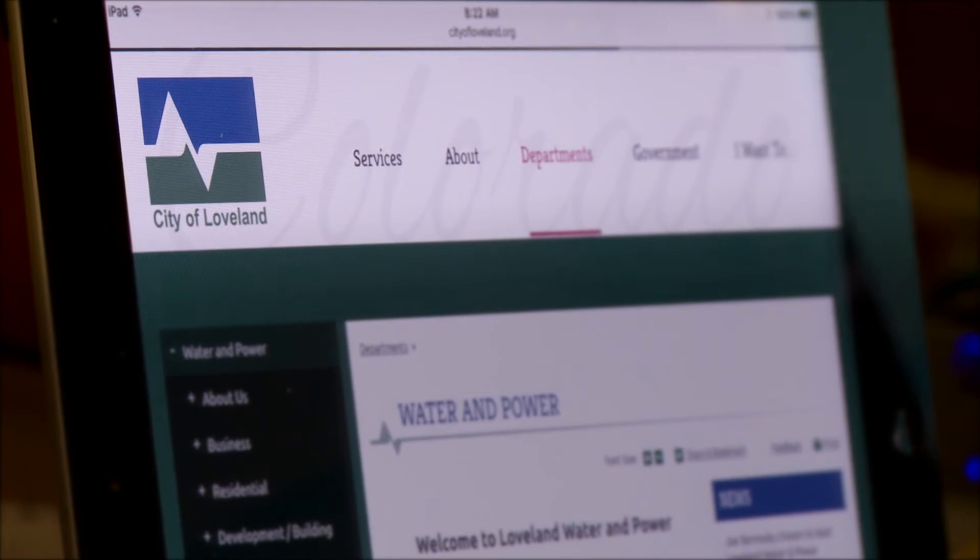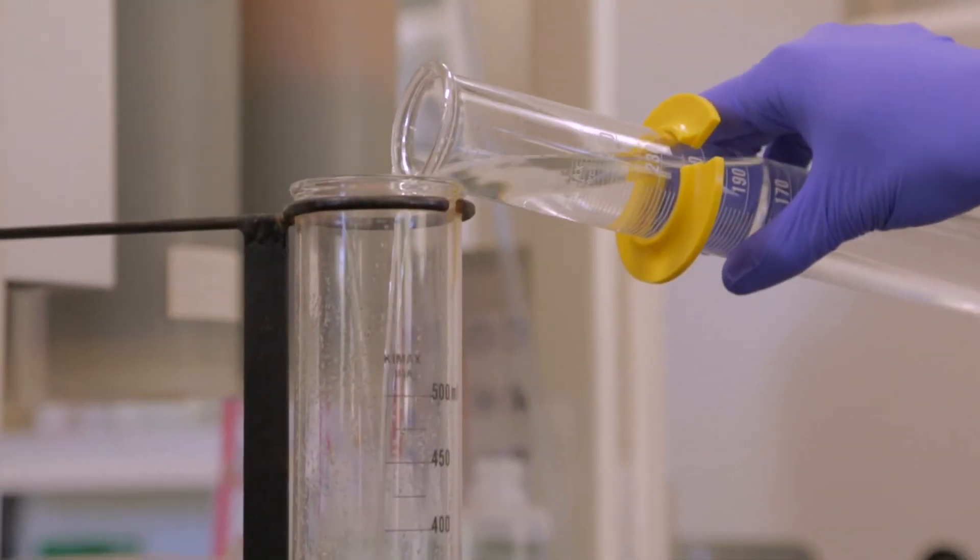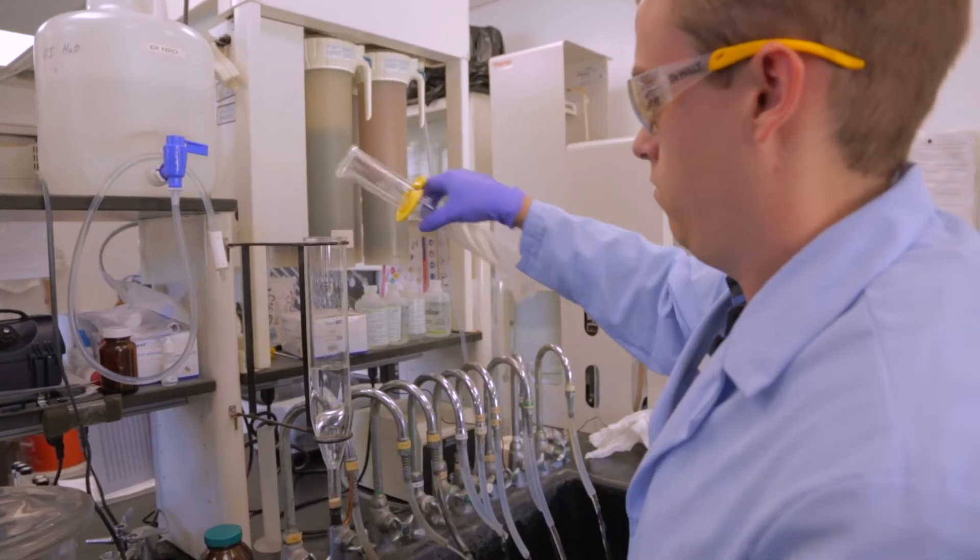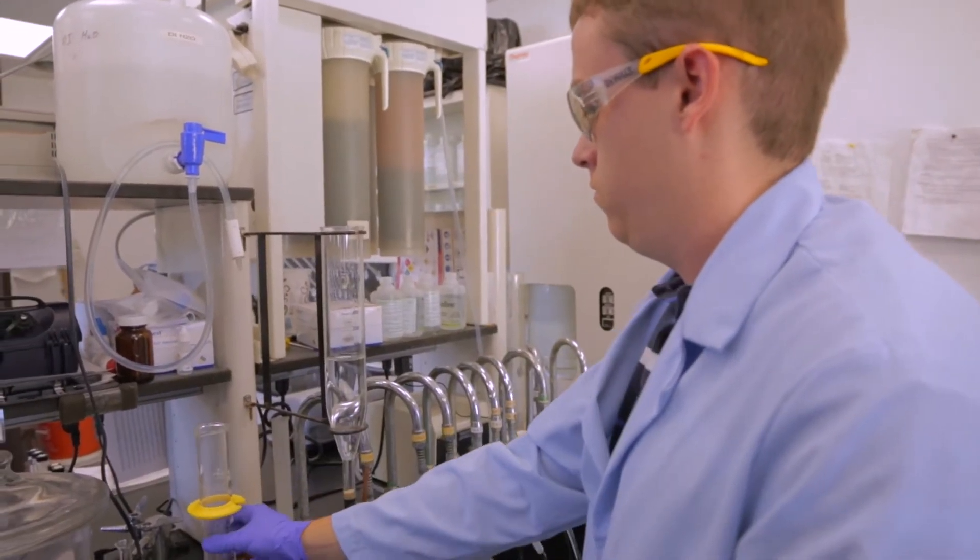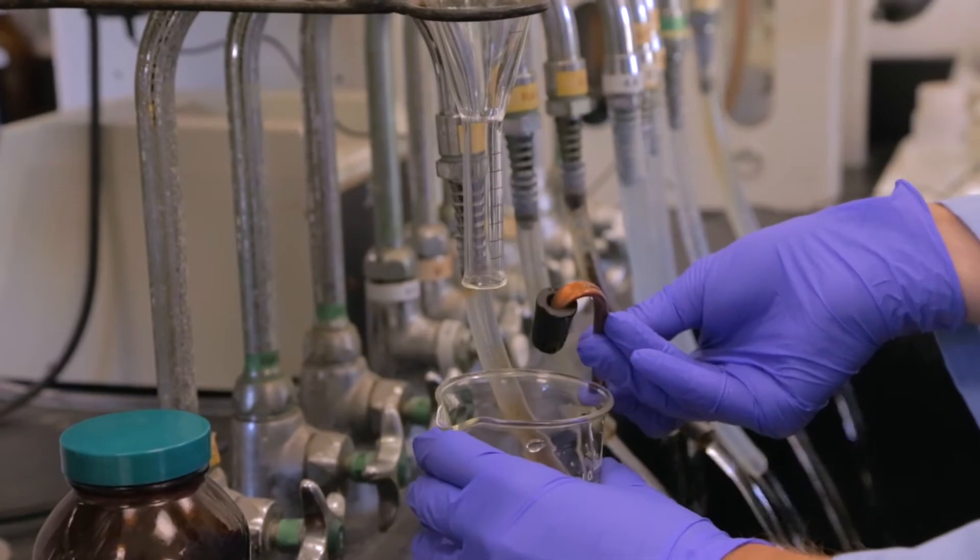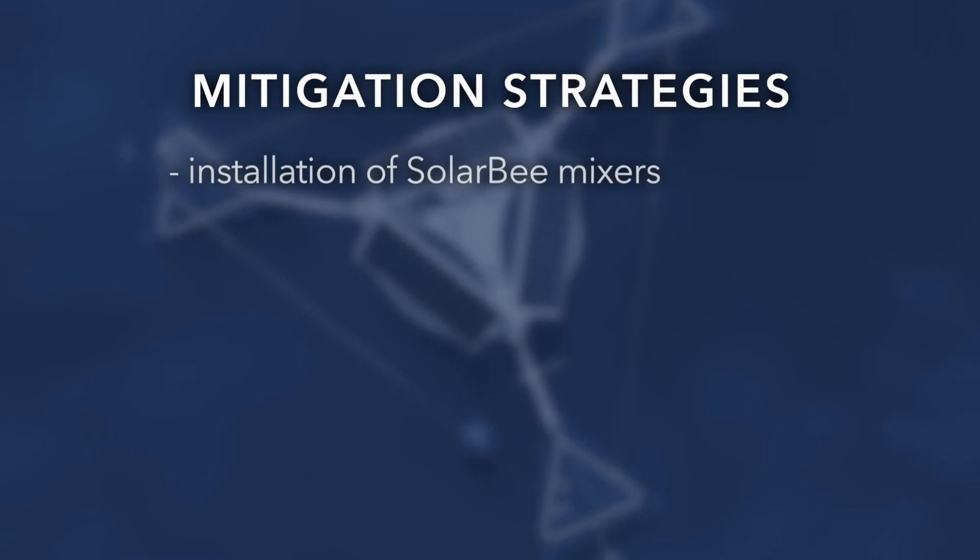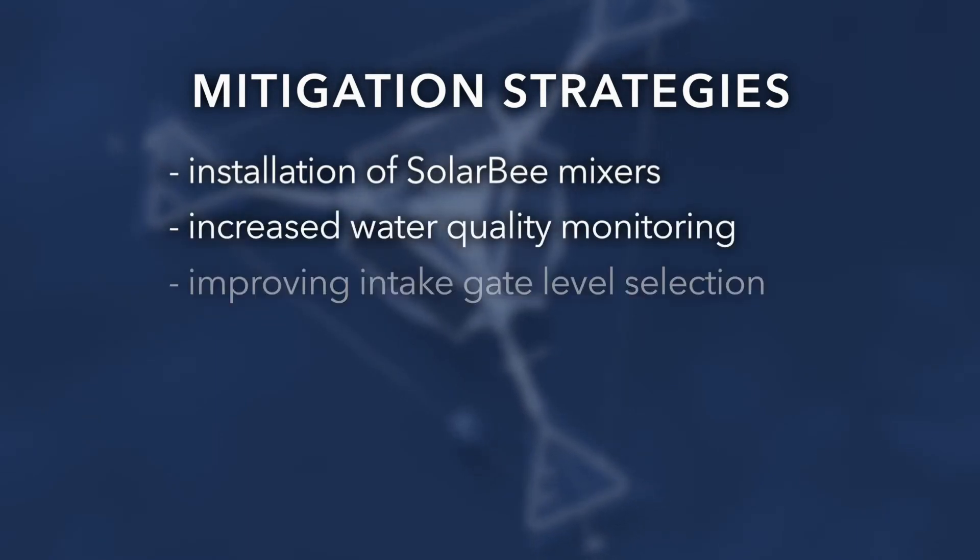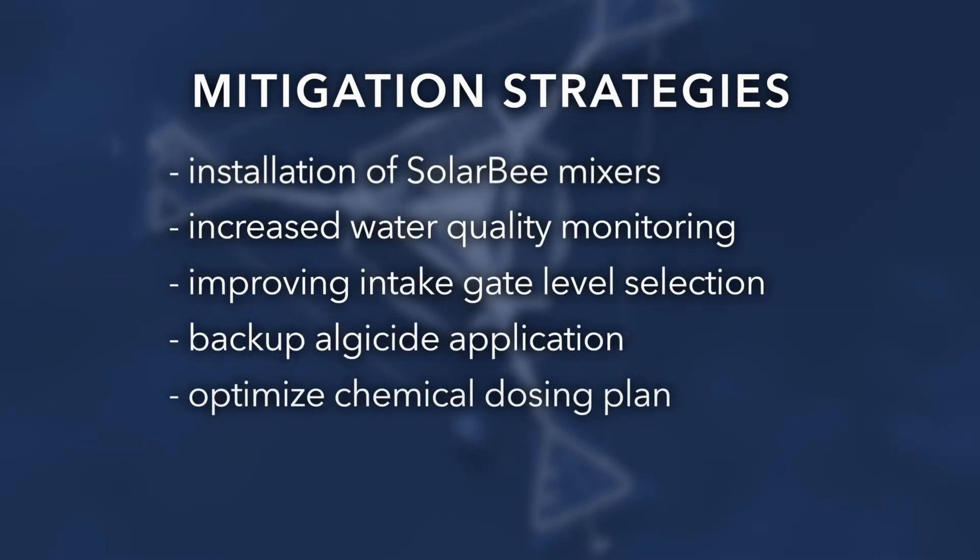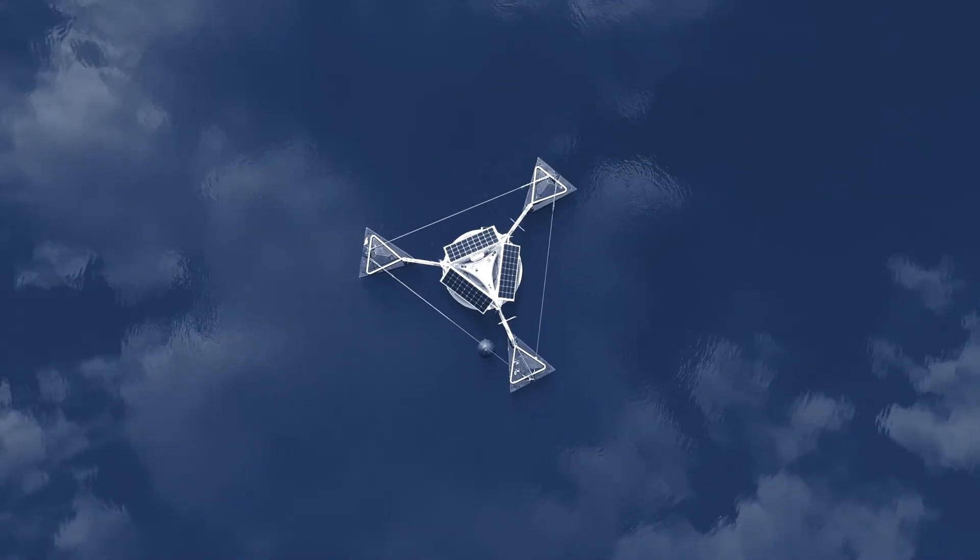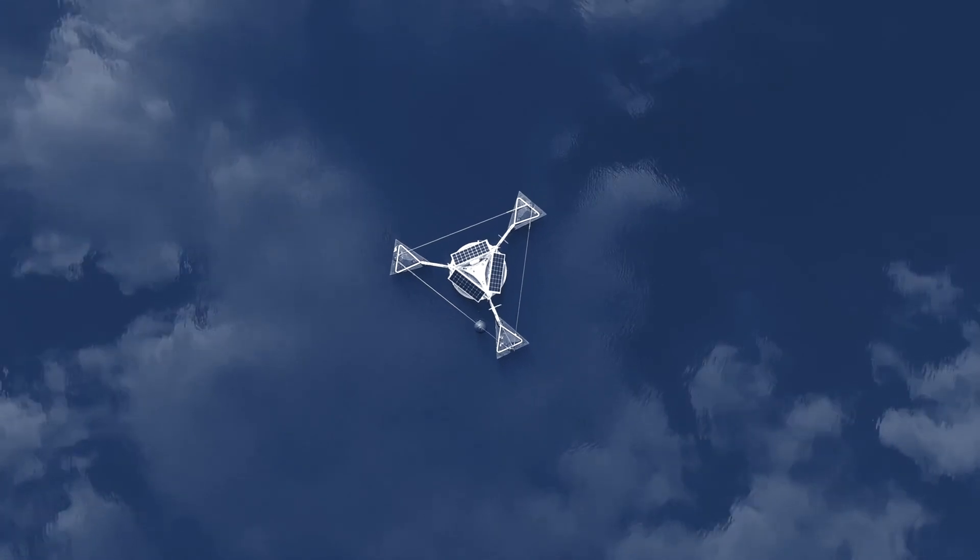We'll be utilizing the website as well as Facebook and Twitter. We'll be able to let you know what mitigation or strategies we're taking to prevent the problems and anything that you can do yourself to reduce the taste and odor problems if there are in the future. Loveland Water and Power staff will closely monitor the effects of the mitigation strategies and continue to assess emerging technologies to make sure that we are doing everything we can to remove any of those taste and odor compounds that result from algae.